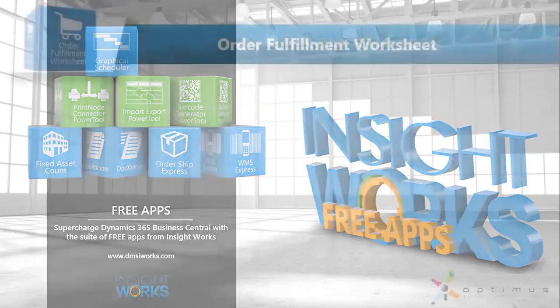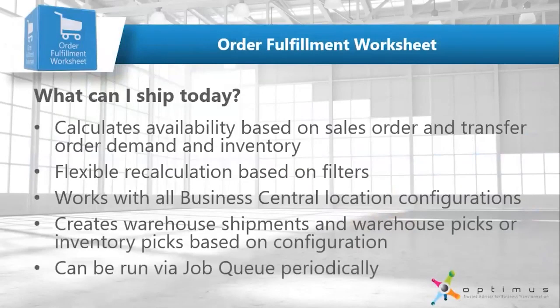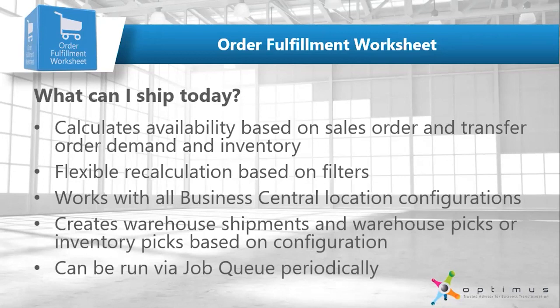What we're focused on today is the Order Fulfillment Worksheet. The goal of the Order Fulfillment Worksheet is to answer the question: what can I ship today? The system goes in, looks at all of your sales orders — or if you're using warehouse management, it looks at warehouse shipments, transfer orders, warehouse picks, and all the things you need to manage your outbound processes. Using sales orders, it'll go through, look at all orders by date, and tell you what's available to ship today. So you don't have to worry about which of your 50 sales orders you can actually go out and ship — the system will tell you.